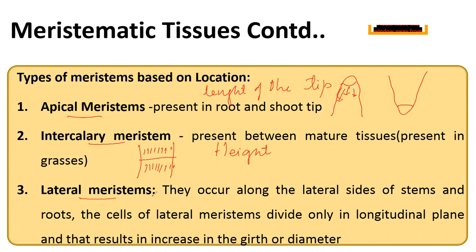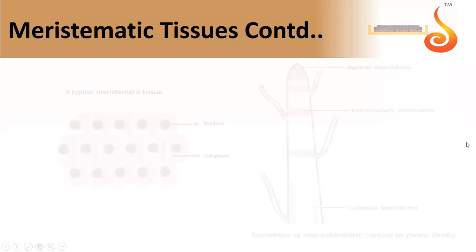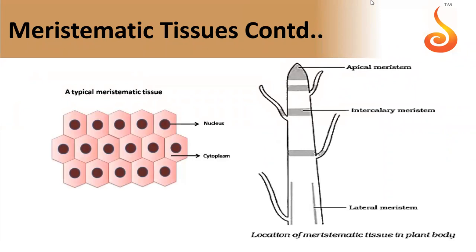Lateral meristems are present along the sides of the stem. They increase the girth or diameter of the stem. An example of lateral meristems is cambium. Cambium is of two types: interfascicular and intrafascicular cambium. We also have cork cambium, which brings about extra-stelar growth. These are the examples for lateral meristems. Apical meristems are towards the tip, intercalary above and below the node, and lateral meristems along the sides.